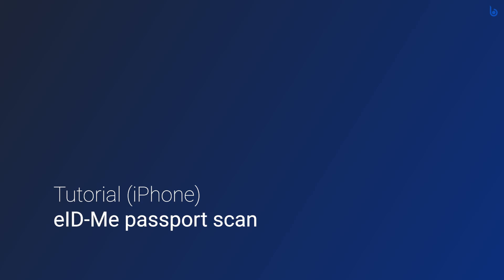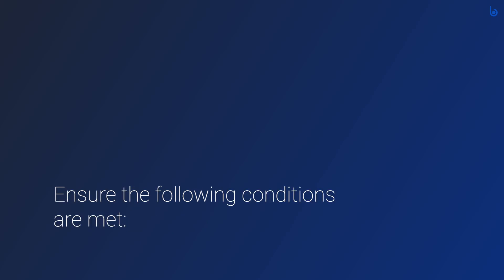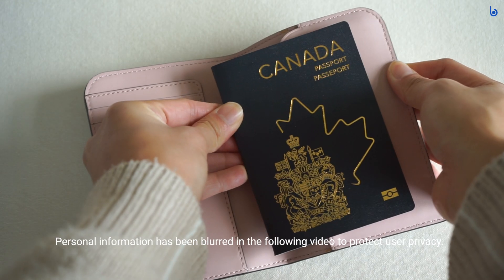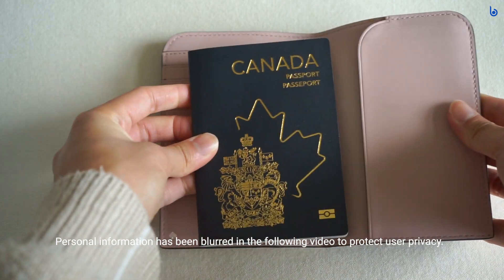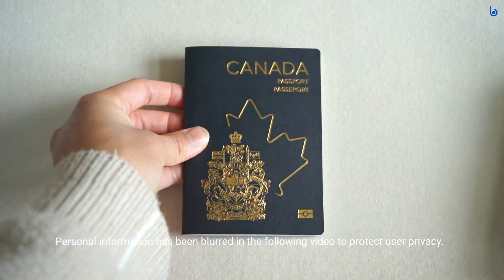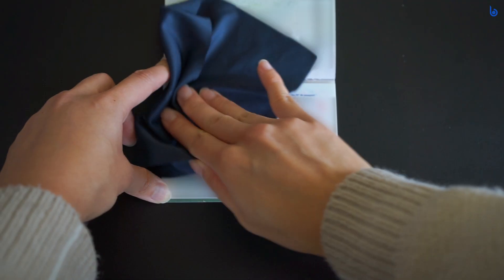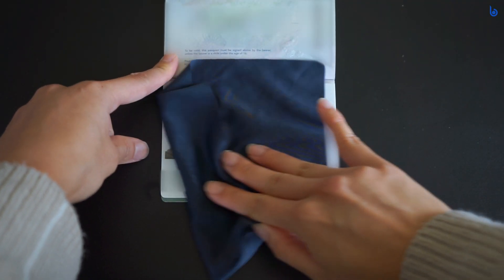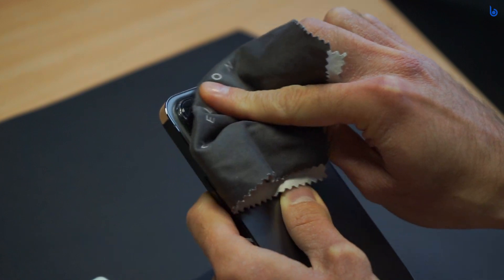To scan your passport in the eID.me app, ensure the following conditions are met. If you have a passport cover, remove it. Open your passport to the photo page. Ensure your photo page and camera lens are clean. Ensure there's adequate lighting and no glare.